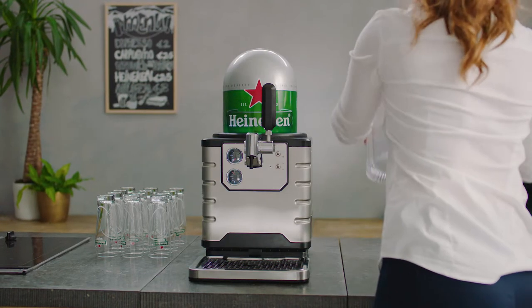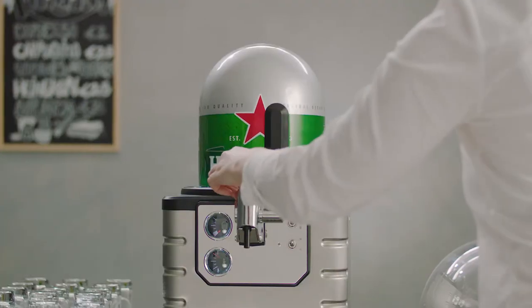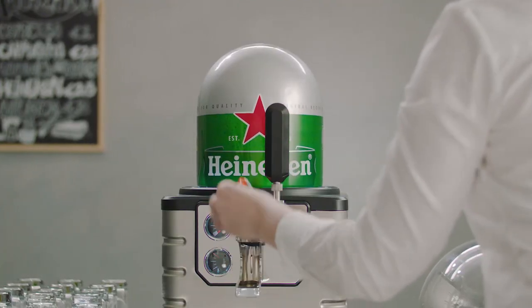Simply remove the dome and open the tap lid. Pull out the spout and tube and remove the keg.